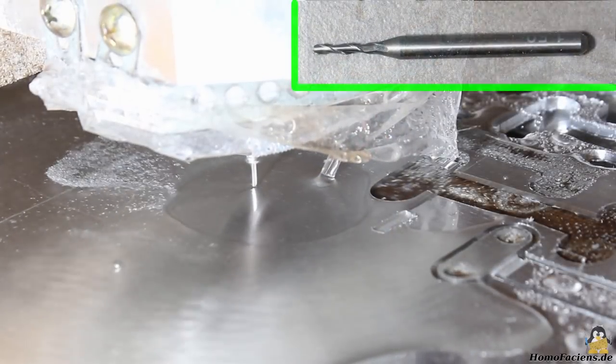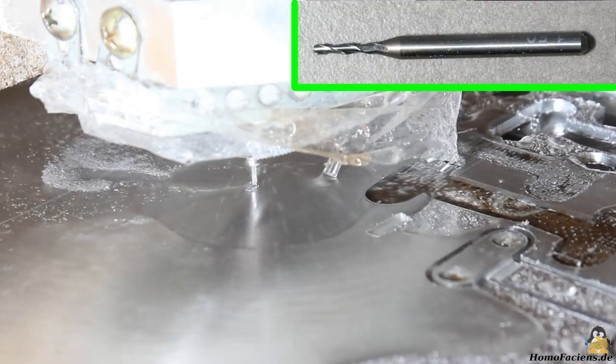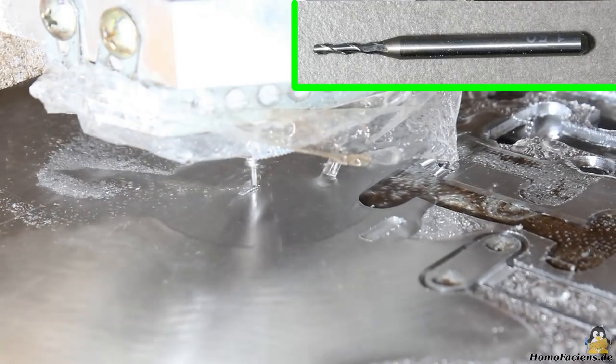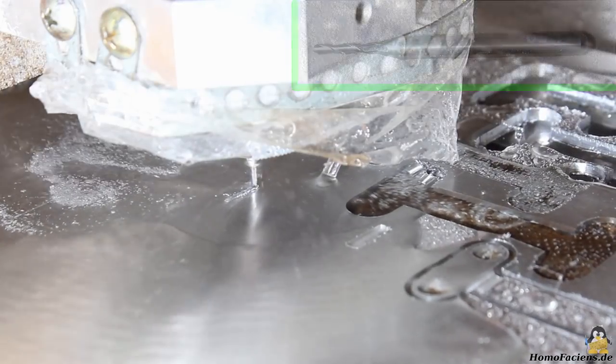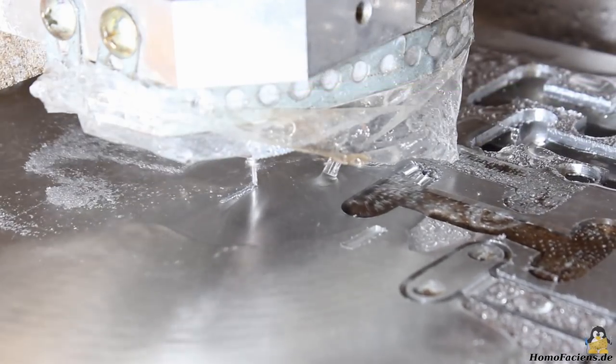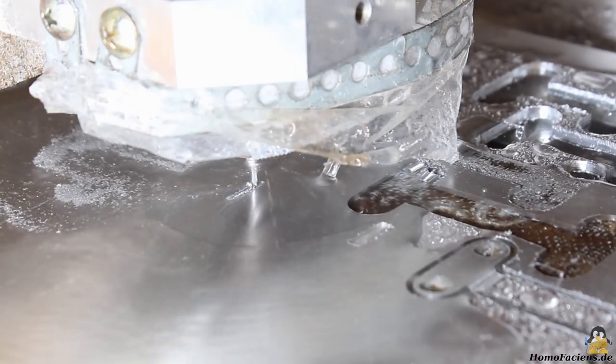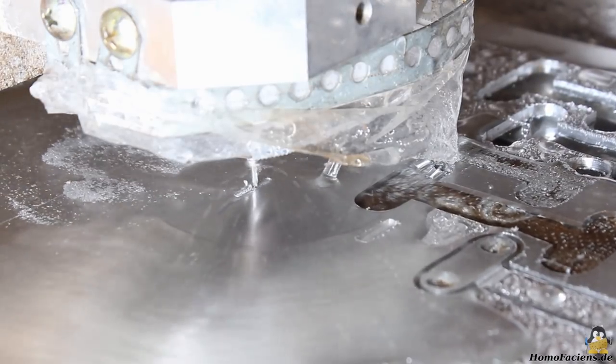In a first run I was using a two flutes cutting tool with a diameter of 1.5mm, the type of tool that I had used in previous test runs cutting plastics. The 3mm aluminum was cut in several runs with a depth of 0.5mm per step.